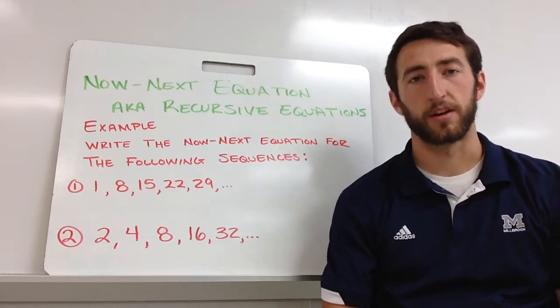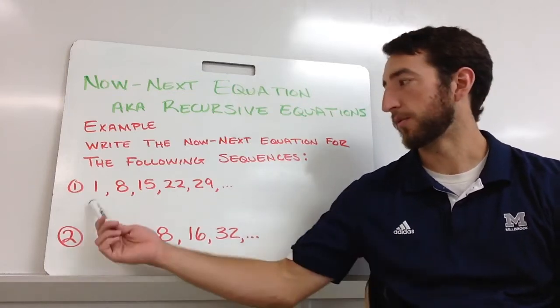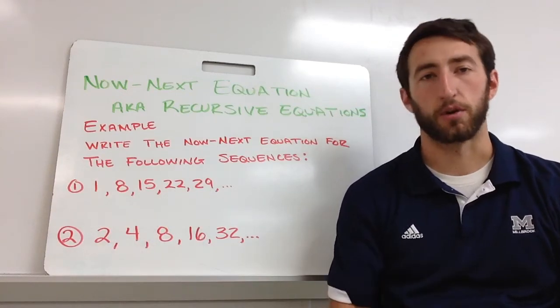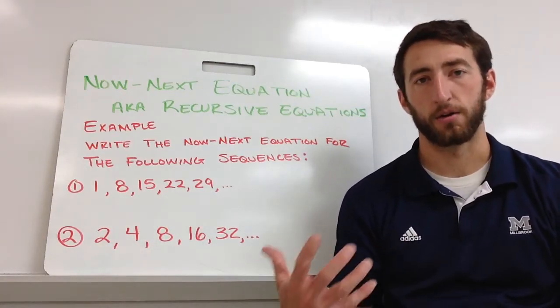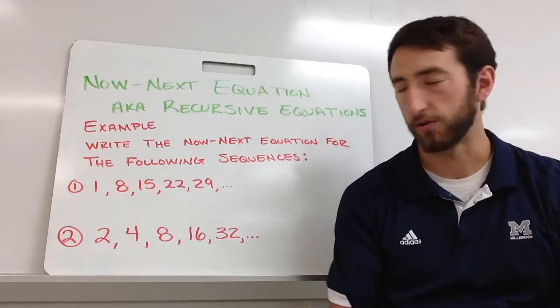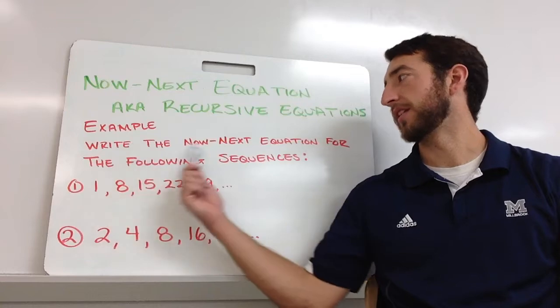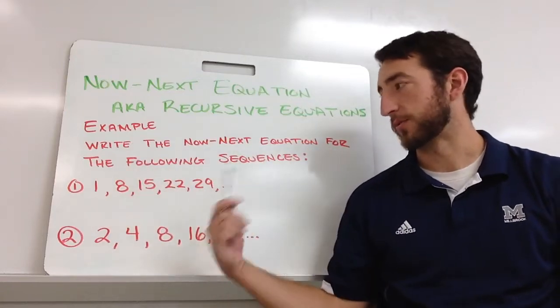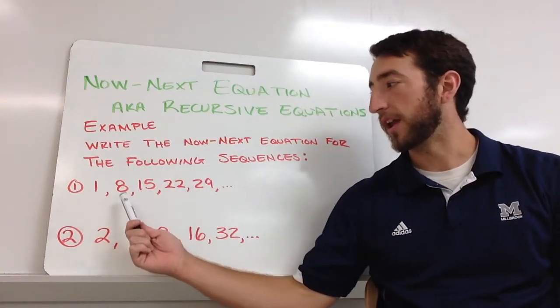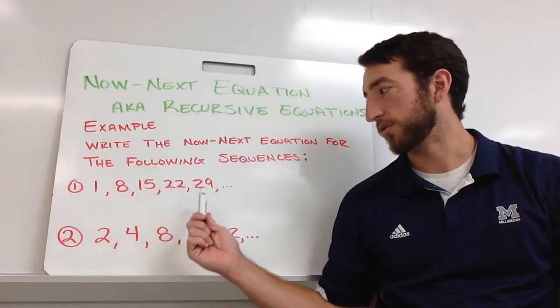Basically what it is, you take a sequence of numbers like 1, 8, 15, 22, 29, and we're going to describe how to find that pattern or how to do that pattern. So an example might be: write the now-next equations for the following sequences. We have this sequence 1, 8, 15, 22, 29.